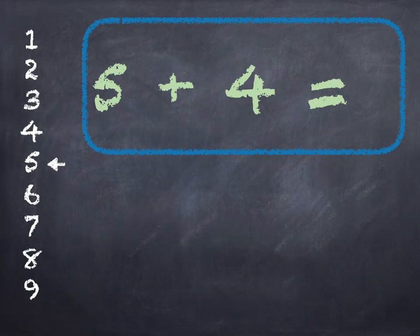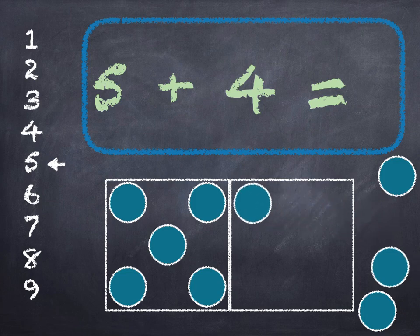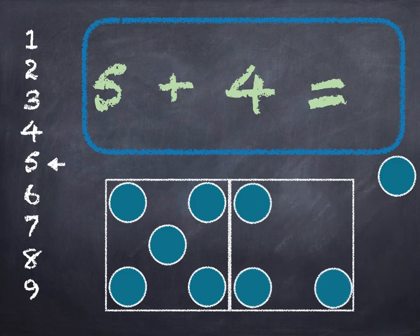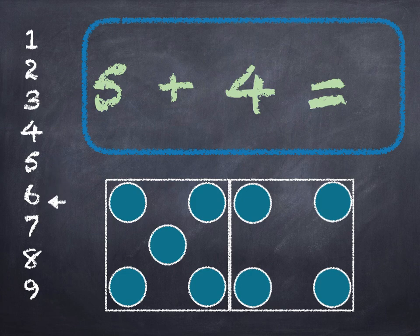5 plus 4. 5 in the box, add 4 on. 5, 6, 7, 8, 9. Start at 5 on the number line and go down 4. 1, 2, 3, 4. 5 plus 4 is 9.